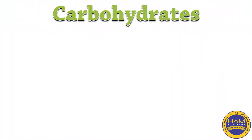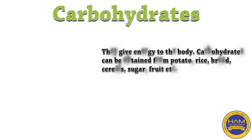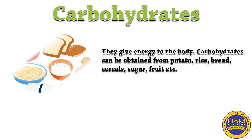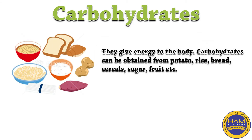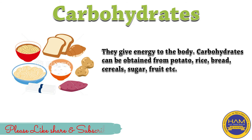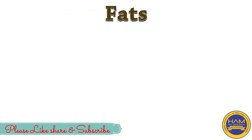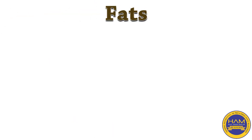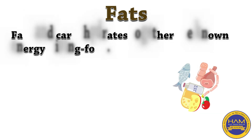The first nutrient is carbohydrates. Carbohydrates give energy to the body — carbohydrates हमारे शरीर को energy provide करते हैं। Carbohydrates can be obtained from potato, rice, bread, cereals, sugar, fruit, etc.